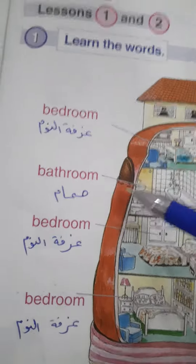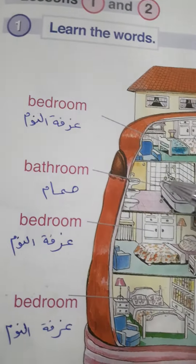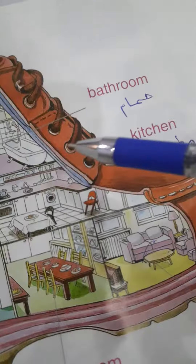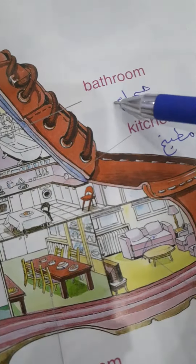False — there is one dining room. There is one living room — true. There are two bathrooms — false, there is one. True.